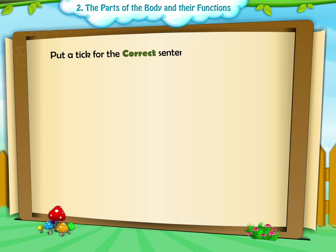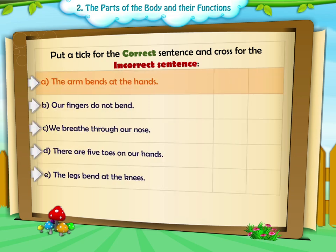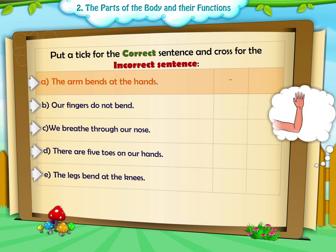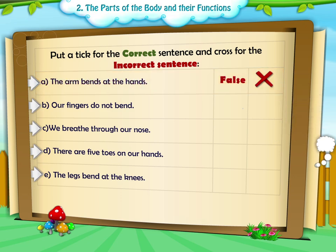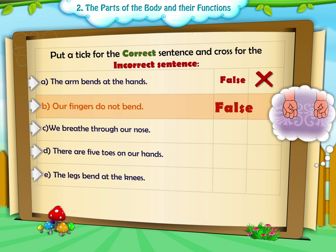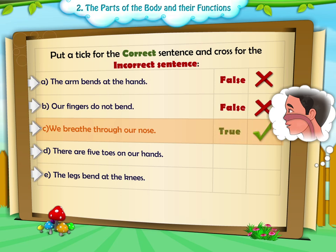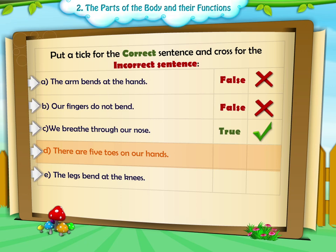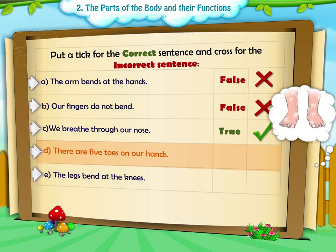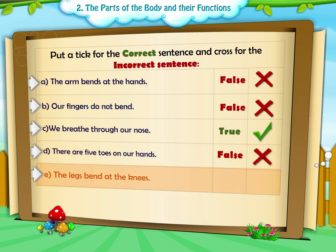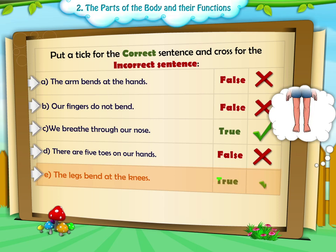Put a tick for the correct sentence and a cross for the incorrect sentence. A: The arm bends at the hands — False. B: Our fingers do not bend — False. C: We breathe through our nose — True. D: There are five toes on our hands — False. E: The legs bend at the knees — True.